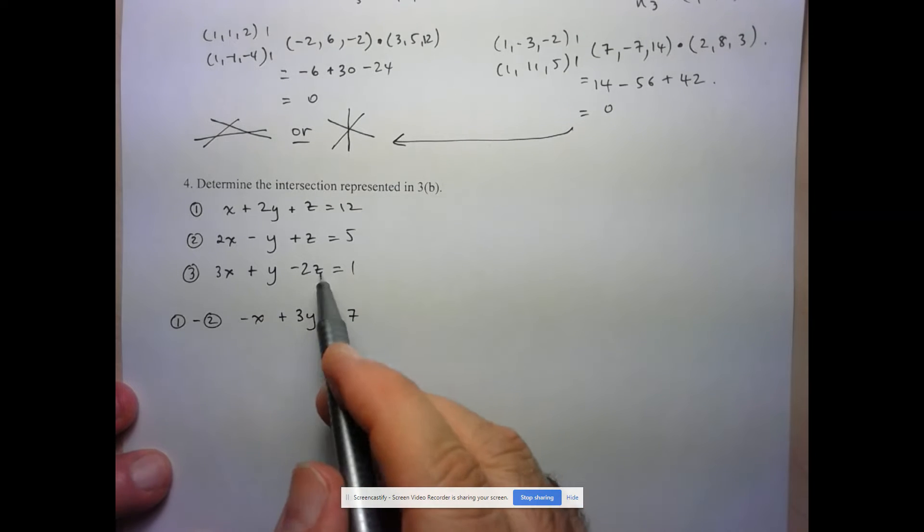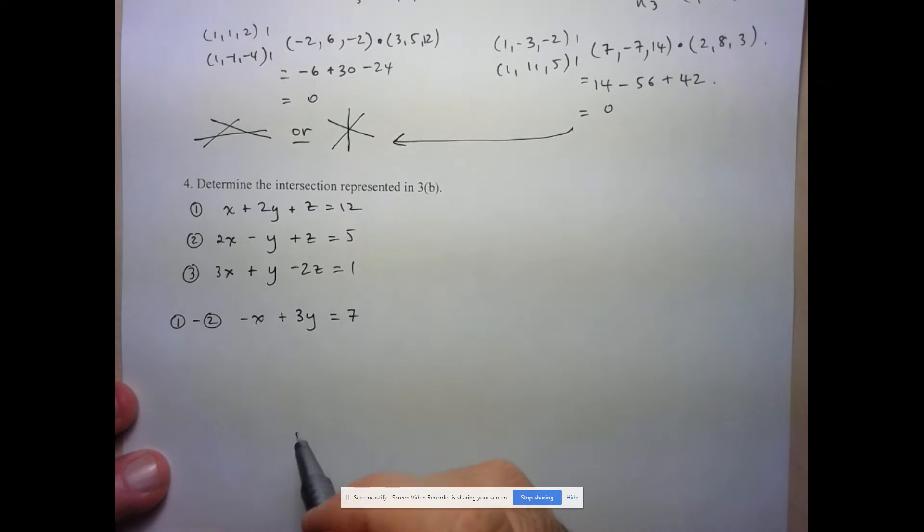All right, so what I've managed to do is create an equation involving only two variables. Now when we were solving intersections of two planes, we solved for one variable and set that up to write everything in terms of one of the three variables. The reason we did that is because we were looking for the equation of a line. But I'm going to take a slightly different approach at this point.